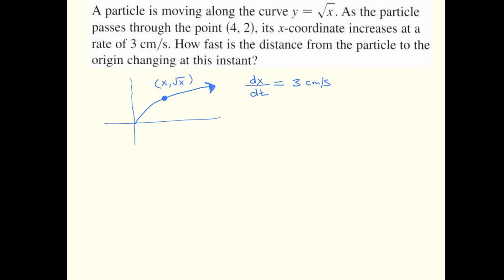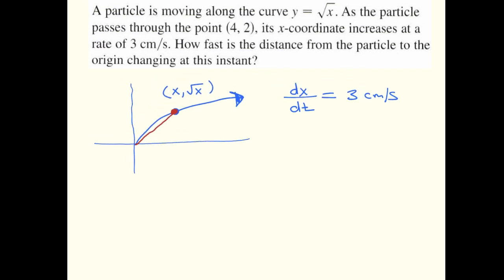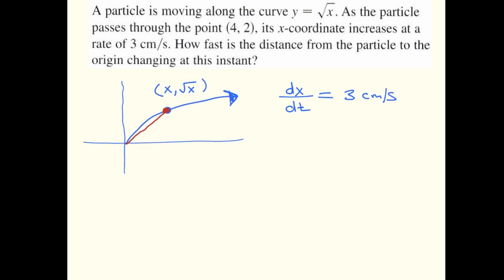One thing is that I'll label this point here (x, root x) because it's on the curve so that's its y-coordinate. We also know that we're interested in the rate of change of this length. If you look at the description, it says how fast is the distance from the particle to the origin changing at this instant, so that needs to be a variable too. I'm going to call that z.